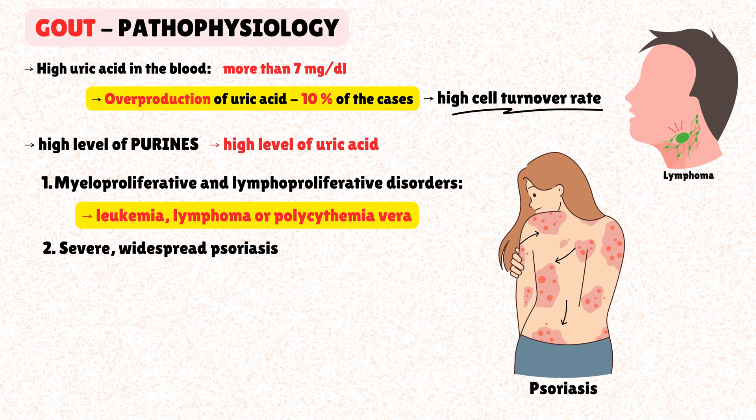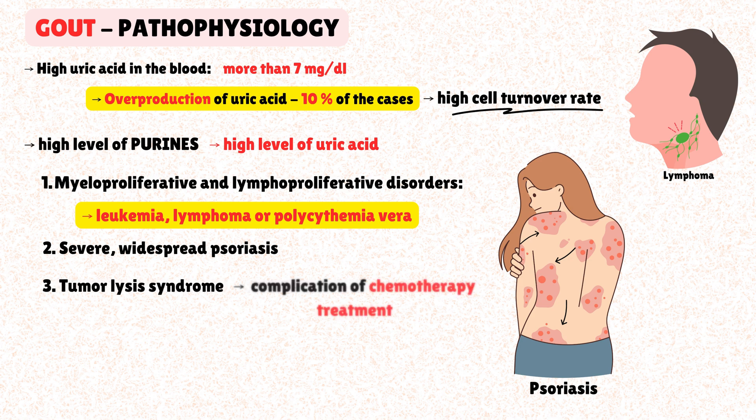A particular life-threatening example is tumor lysis syndrome, a complication of cancer chemotherapy treatment, where a large number of tumor cells are destroyed rapidly, releasing vast amounts of intracellular contents, including purines, into the bloodstream.